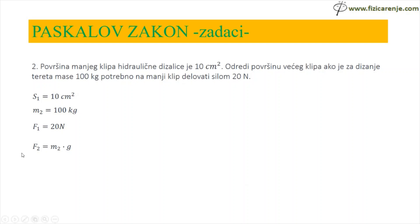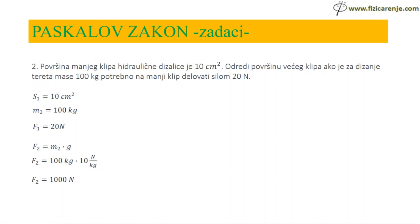Po obrascu F2 je jednako M2 puta G. Umjesto M2 pišem 100 kg, a G je 10 N/kg. 100 puta 10 je 1000, kg i kg se skrate i ostaje samo N. Sada imam S1, imam F1, imam F2 i mogu dobiti koliko je S2.